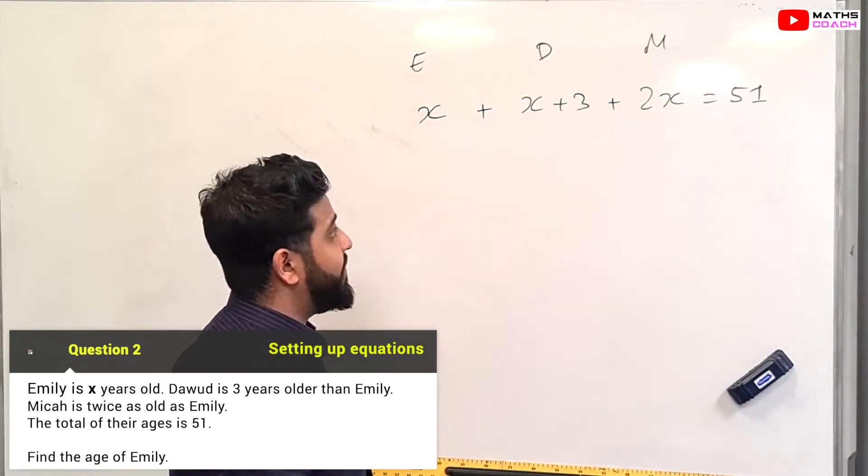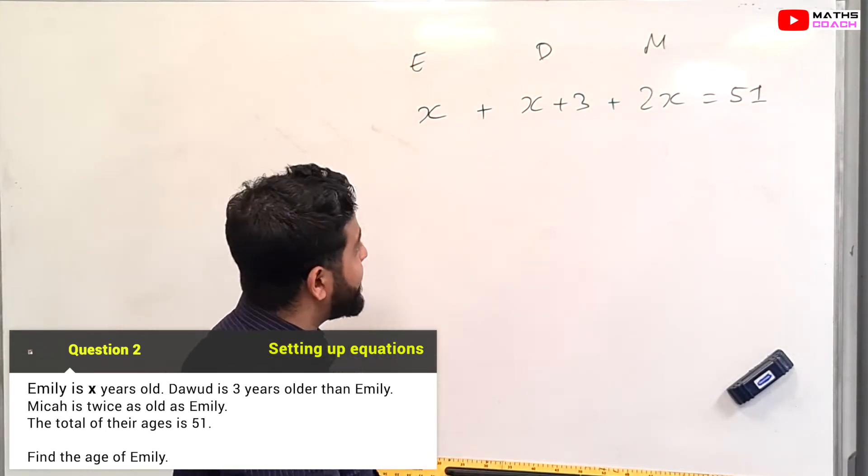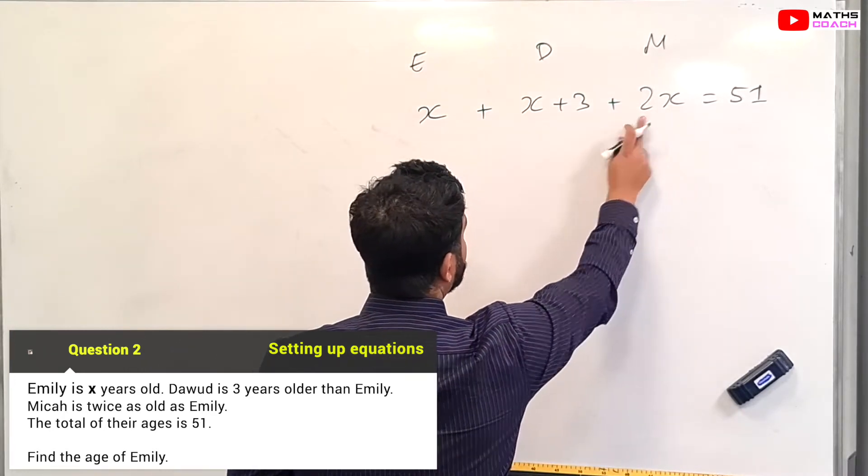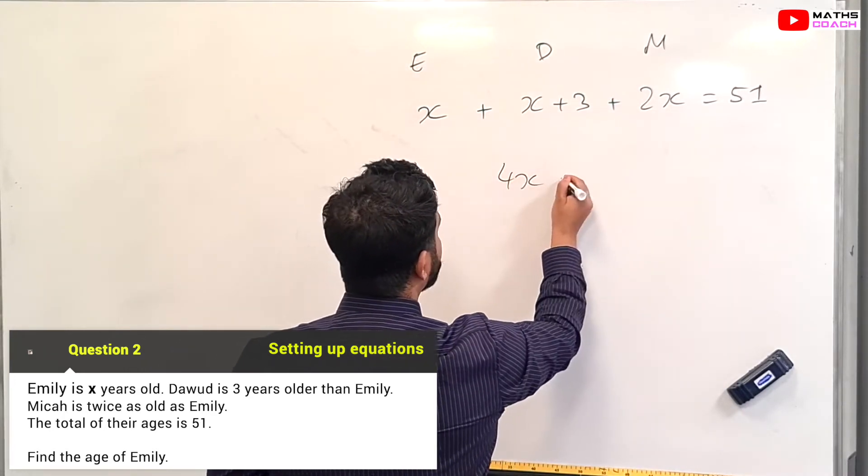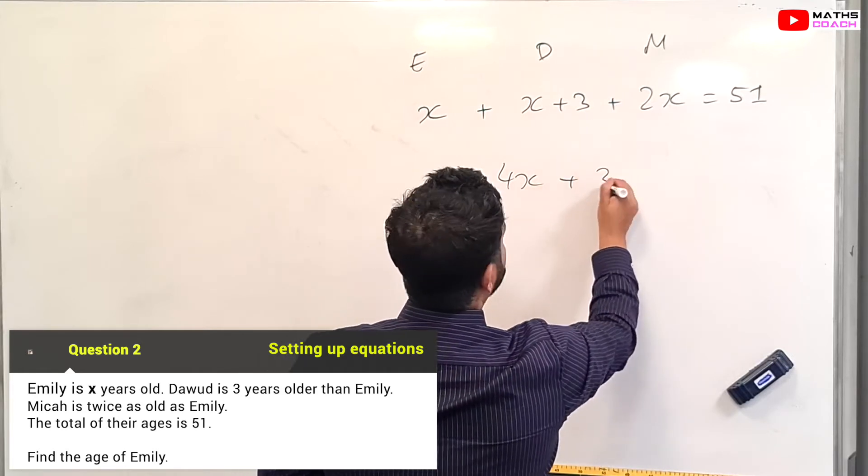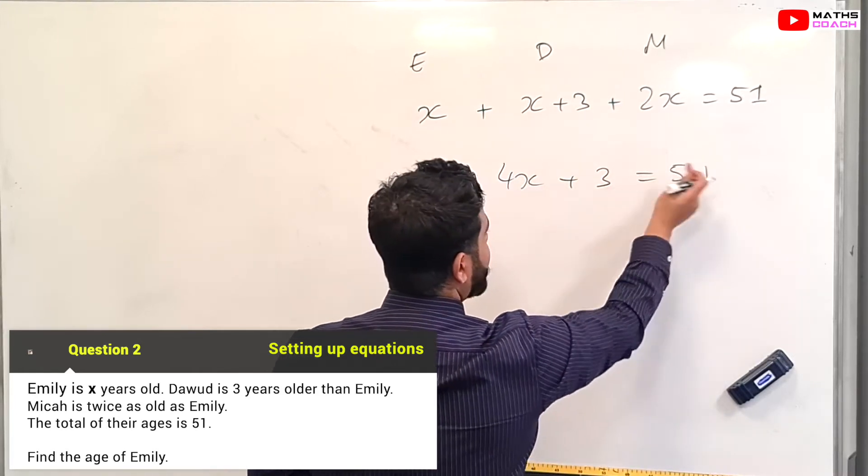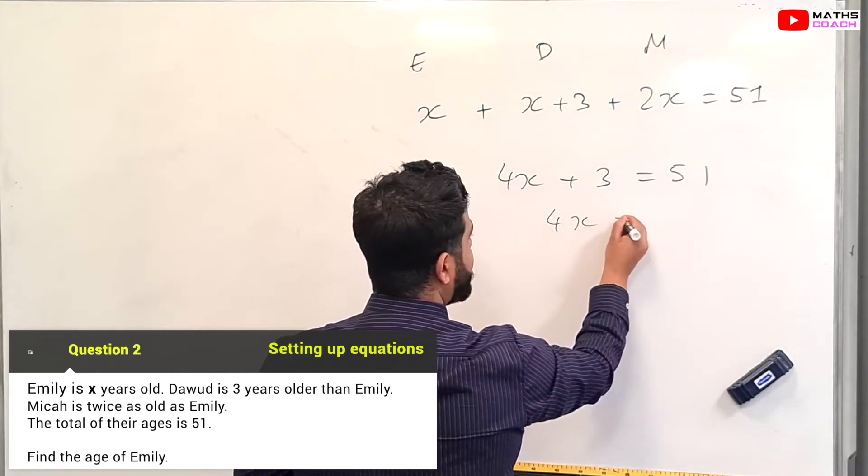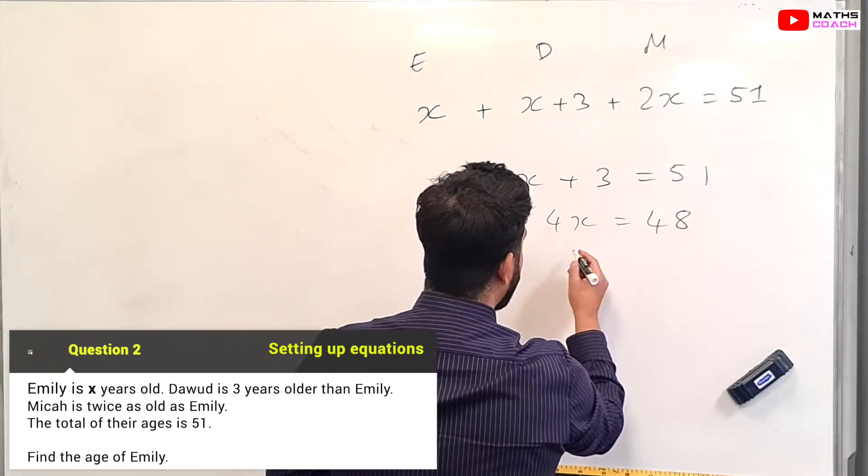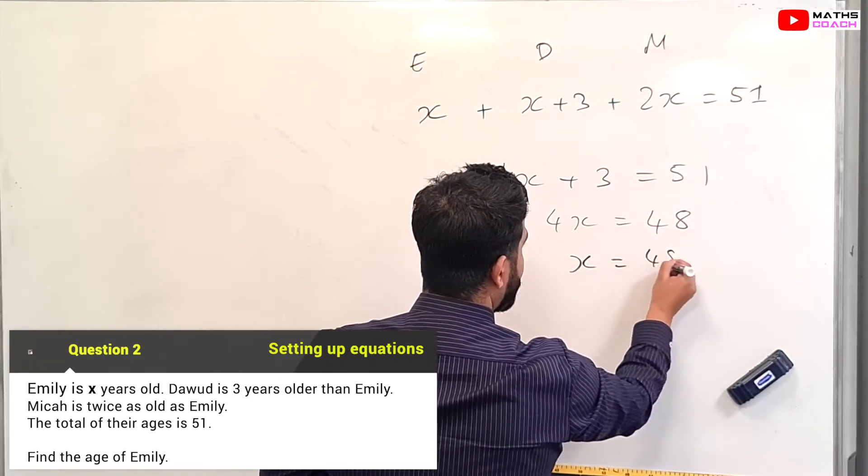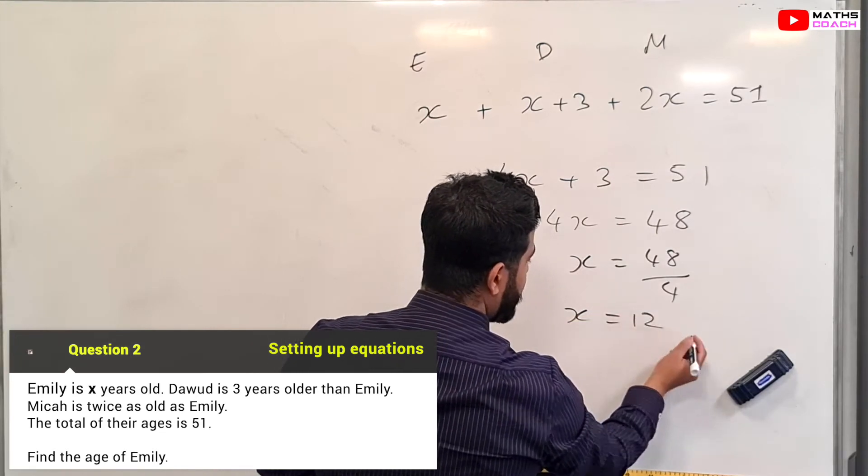So now we have another equation. We collect the like terms and solve. X plus X plus 2X gives us 4X plus 3 equals 51. We take the 3 to the other side, so 4X equals 48. Therefore, 48 divided by 4, X equals 12.